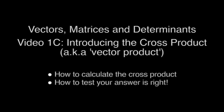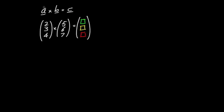In this video we'll see how to calculate the cross product of two vectors, also called the vector product because the output is a new vector. We'll also see how to test that the answer is correct. Here, A cross B = C. The symbol for cross product is the multiplication symbol. With A = (2, 3, 4) and B = (4, 5, 6), we'll find C, requiring work for each of the three components.